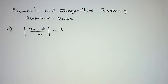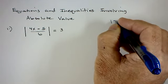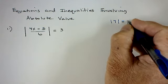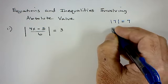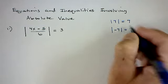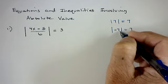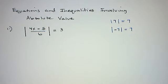Let's talk about equations and inequalities involving absolute value — a topic that gets a lot of questions. Most people know what absolute value means: the absolute value of seven is seven, and the absolute value of negative seven is also seven. Absolute value takes any number and makes it positive. If it's already positive, great; if it's negative, it turns it into a positive number.